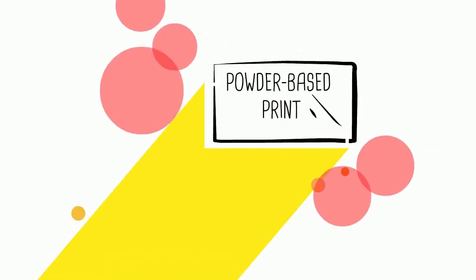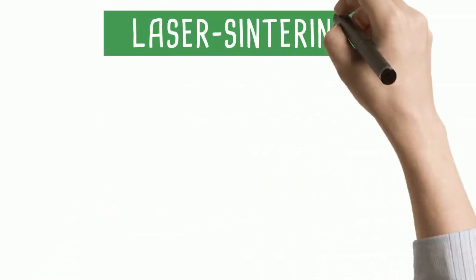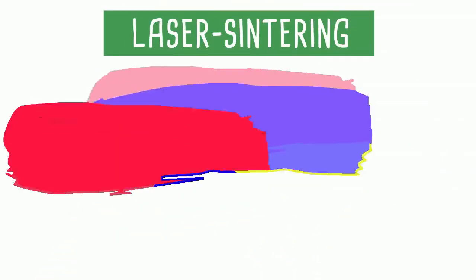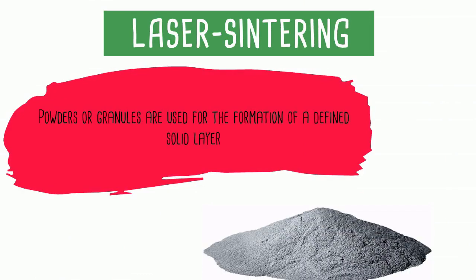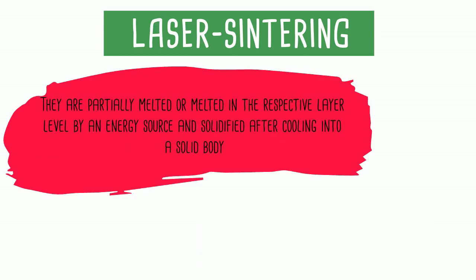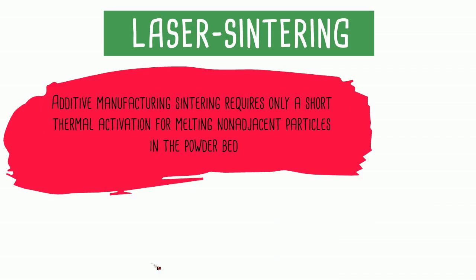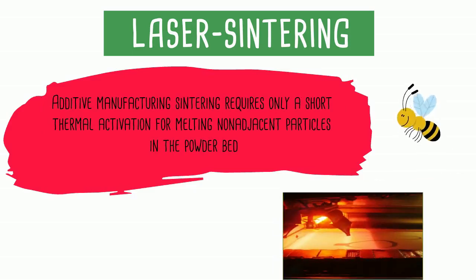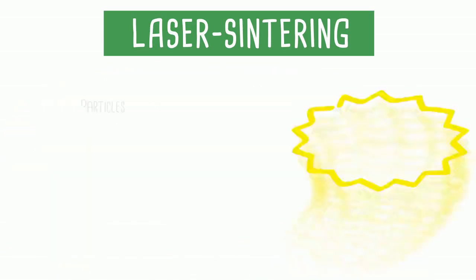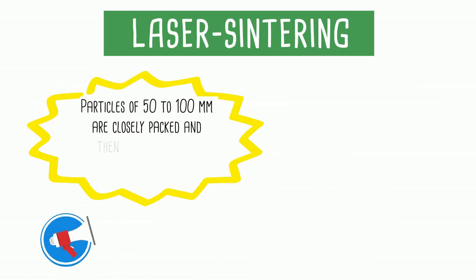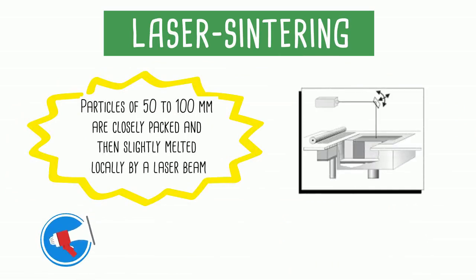Powder based print: laser sintering. Powders or granules are used for the formation of a defined solid layer. They are partially melted or melted in the respective layer level by an energy source and solidified after cooling into a solid body. Additive manufacturing sintering requires only a short thermal activation for melting non-adjacent particles. Powder bed particles of 50 to 100 micrometers are closely packed and then slightly melted locally by a laser beam.